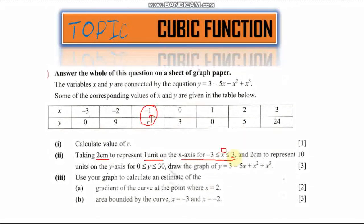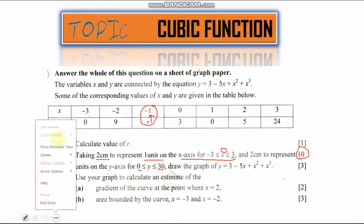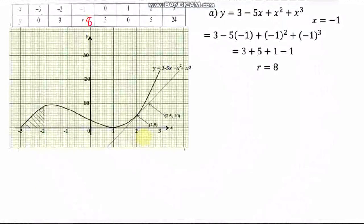In the y-axis, we still use the bigger box but the units are different — 2 centimeters represents 10 units. So each 2 cm step gives you 10, 20, 30. In the y-axis we do not have negative values, only positive values. We are going from 0 to positive 30. I already did this — this is my scale here, as you can see.